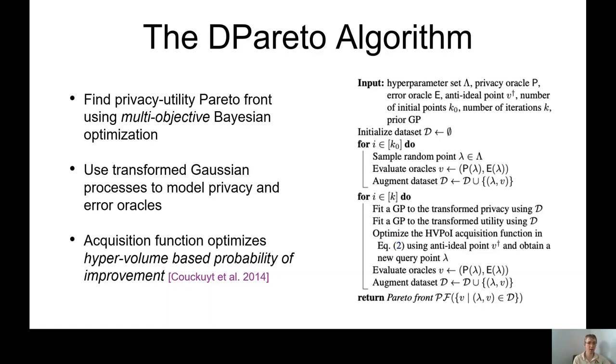And remember, we are in a multi-objective case. So here, acquisition functions get slightly trickier, and we use hypervolume-based probability of improvement. This is an acquisition function that tries to increase front coverage. So yeah, that's the DPareto algorithm.